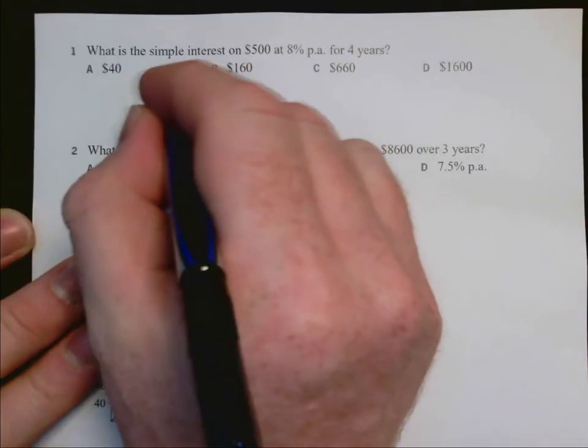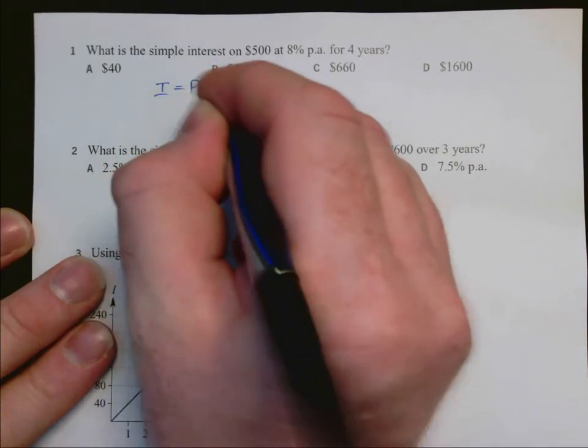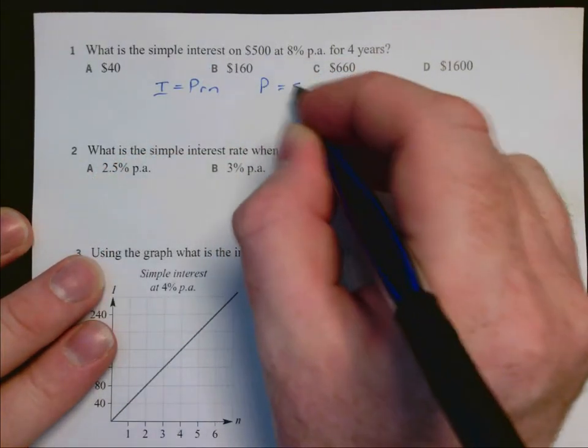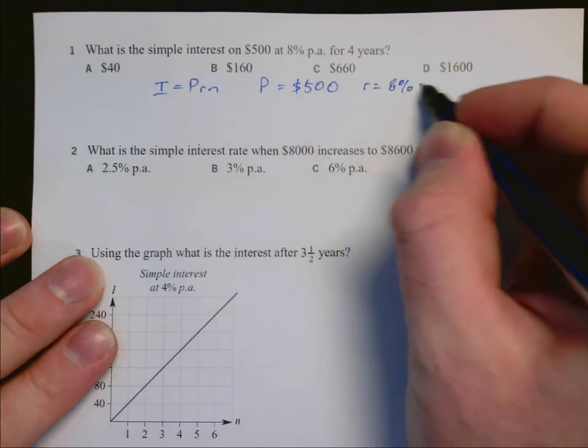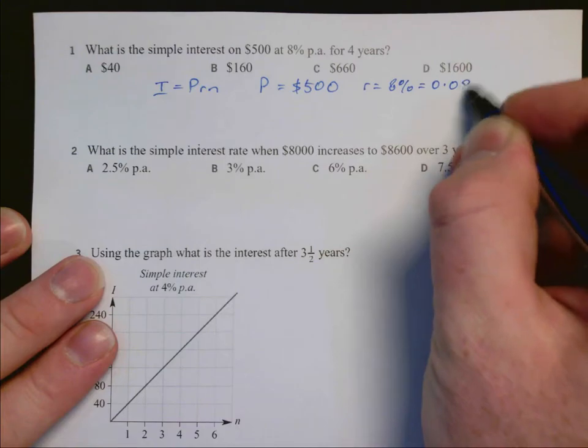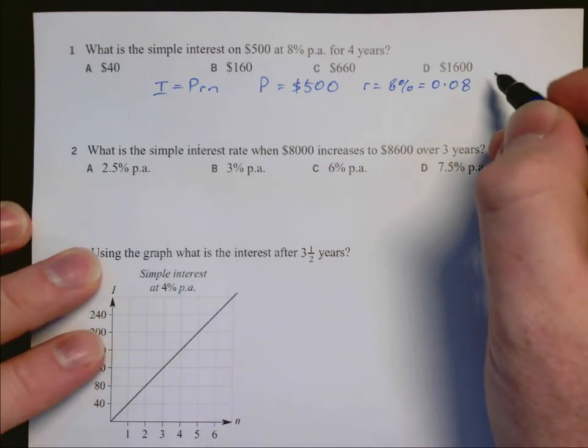So I equals PRN. From the question, the principal amount is $500. The R is 8%, which as a decimal, which is what we use in simple interest, is 0.08.